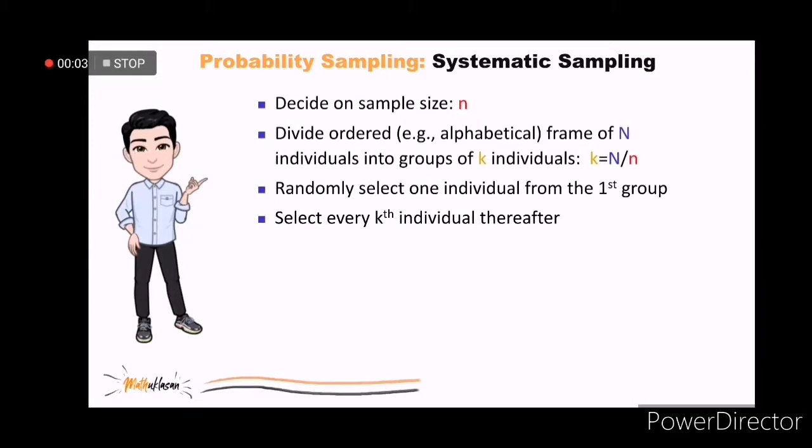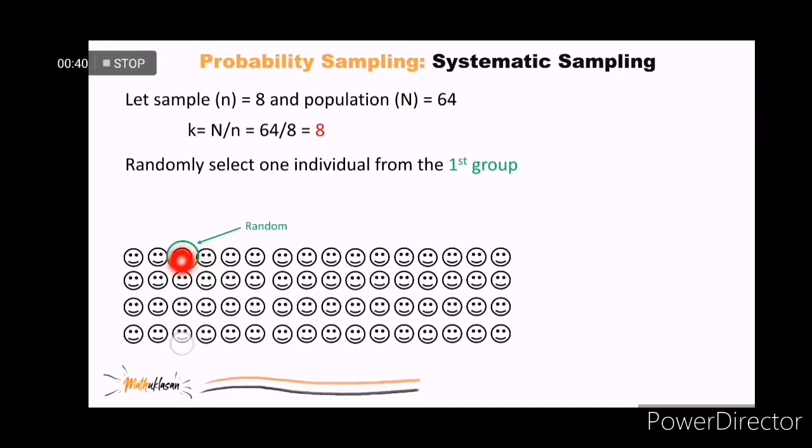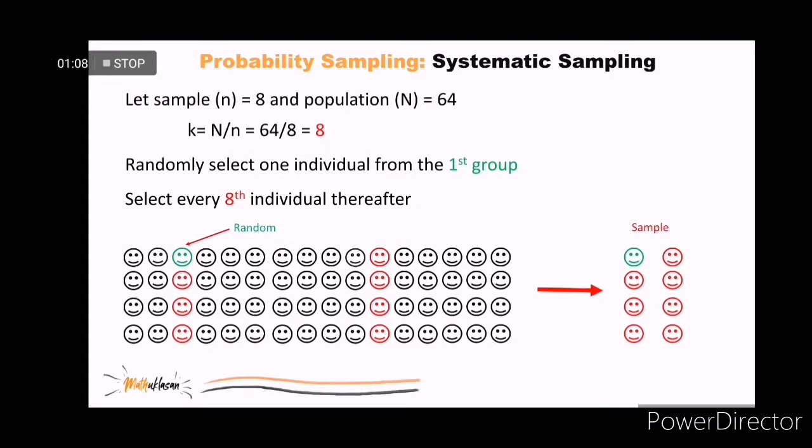In a systematic sampling, you start by deciding on the sample size. Then, use the K equals capital N divided by small n formula to identify K individuals. Randomly select one individual from the first group, then select every K individual thereafter. How about I'll show you an example. Let the sample be 8 and the population be 64. By using the formula, 64 divided by 8, the answer is 8. Then, let's randomly select one individual from the first group. In this case, the third head or person or respondent was chosen. Afterwards, we need to select every 8 individual thereafter. In this case, this one was selected. Now, counting 1, 2, 3, 4, 5, 6, 7, another individual will be chosen. By doing this repeatedly, we'll get our 8 samples. And that's systematic sampling.